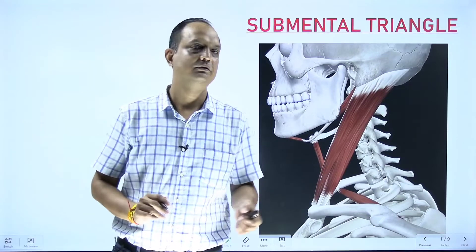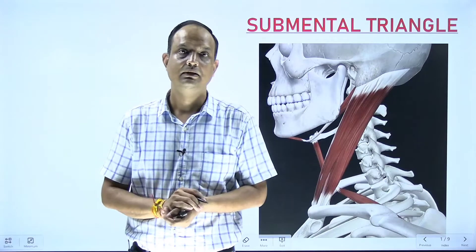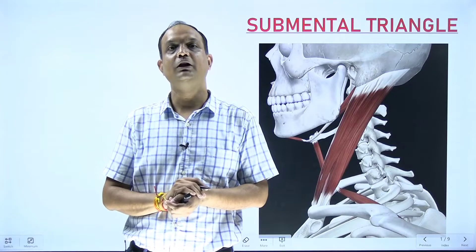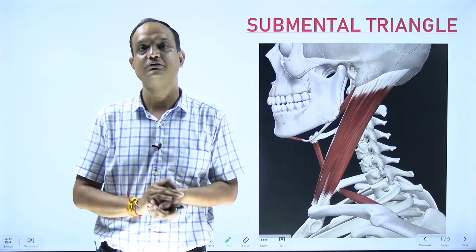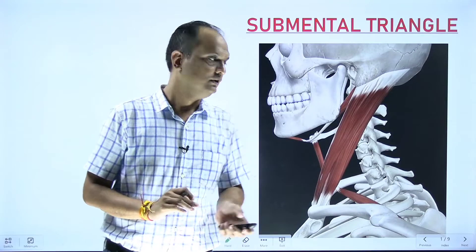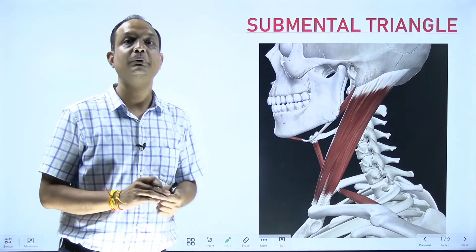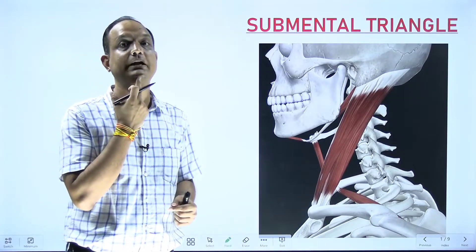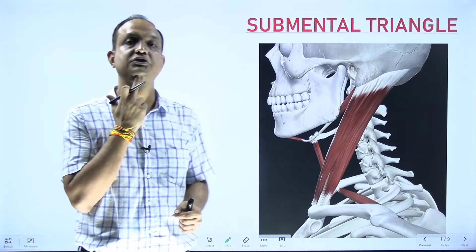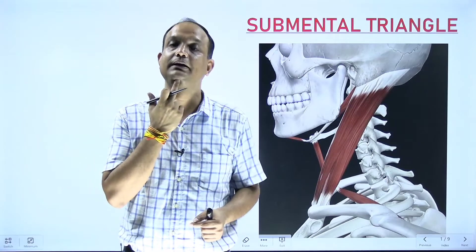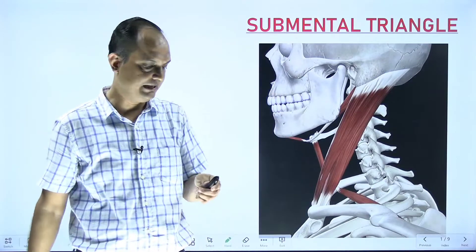Today we'll discuss the submental triangle, which is the smallest triangle when talking about the subdivisions of the anterior triangle. 'Submental' means this area lies below the chin — that is, the mental region — so the area below the chin is known as the submental area or submental triangle.